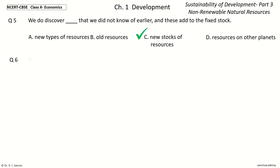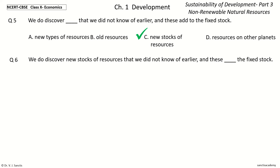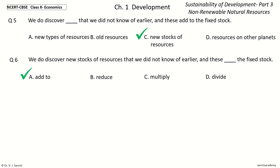Question six: We do discover new stocks of resources that we did not know of earlier, and these — the fixed stock. The options are add to, reduce, multiply, divide. The answer is add to: we do discover new stocks of resources that we did not know of earlier, and these add to the fixed stock.